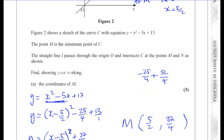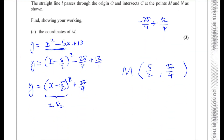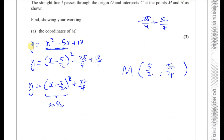Generally with quadratics, completing the square gives you both coordinates at the same time in one step, so it's generally easier. That's Part A done.